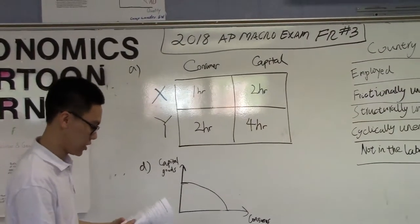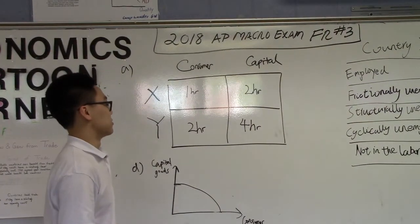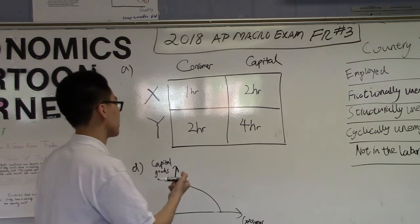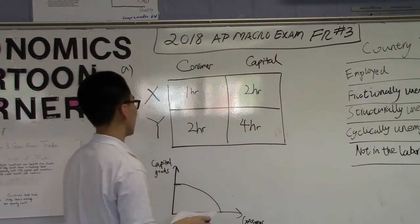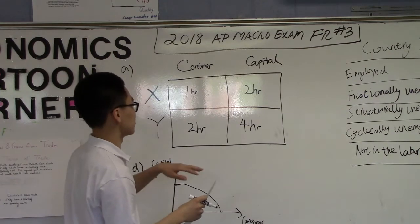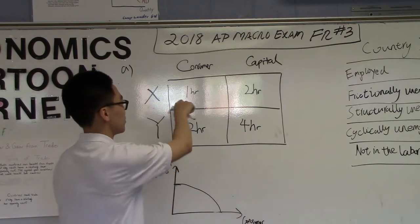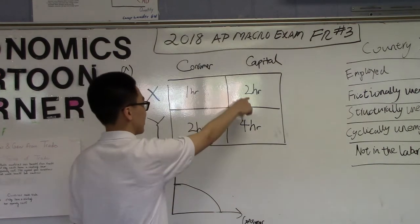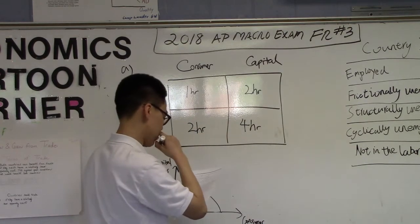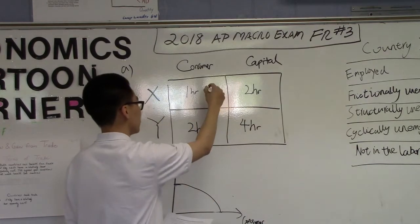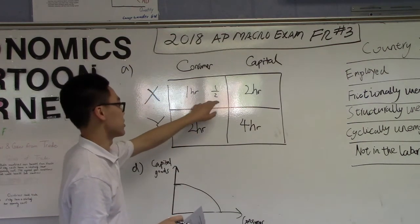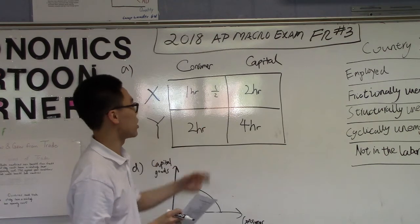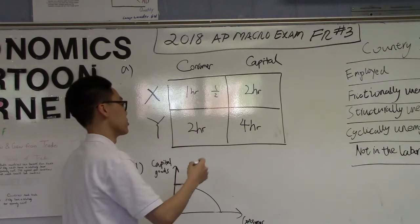For this question, I had to calculate the opportunity cost for producing consumer and capital goods for both countries. It's an input question, so we use one over the other product. So one over two is a half. By producing one consumer good, the opportunity cost is a half of a capital good.